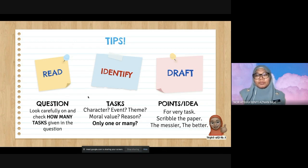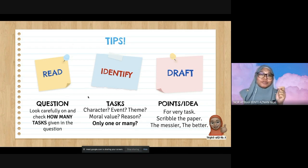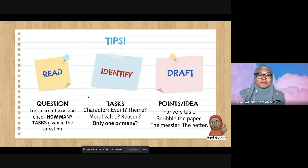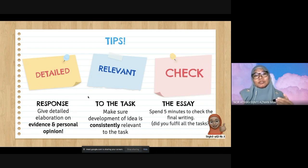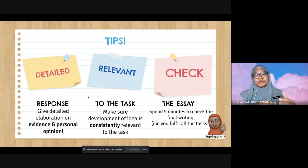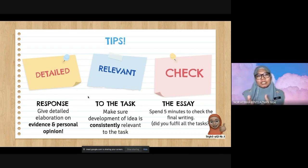Draft your answer — draw out the points or ideas for every task. Scribble the paper; the messier, the better. Make sure you jot down everything you have in mind, whether you use it or not. Then, be detailed — give a detailed response with elaboration on evidence and personal opinion. Also make sure your answer is relevant to the task. Some students start strong but become weak by the third body paragraph, which is not good. It has to be consistent throughout the essay, and that's what differentiates an excellent candidate from a moderate one.